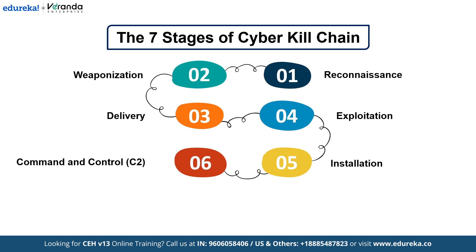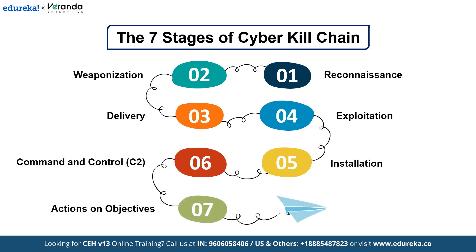Stage 6 is Command and Control: attackers establish a remote connection to monitor and guide their attack, often using obfuscation techniques to avoid detection. Stage 7 is Actions on Objectives: the final stage where attackers achieve their goal, such as data theft, encrypting files for ransom, and compromising supply chains.